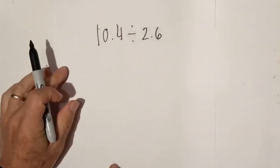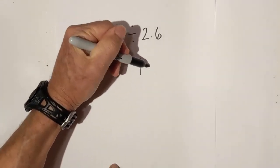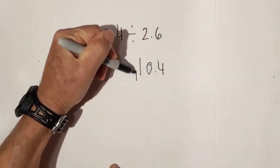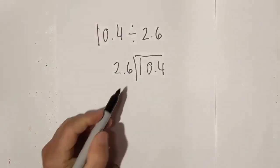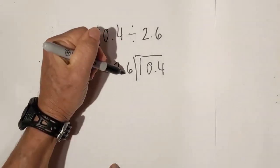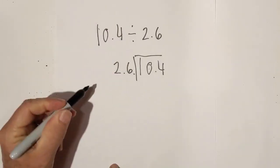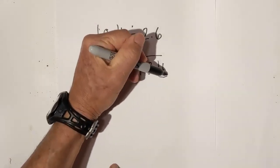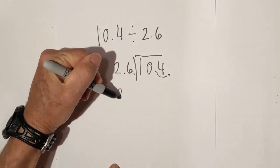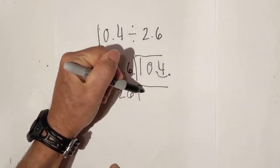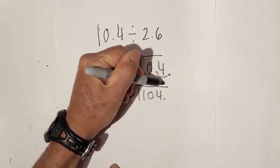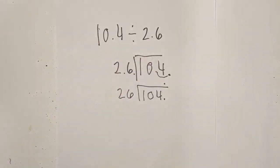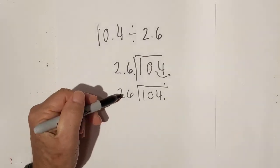Let's solve another problem. We have 10 and 4 tenths divided by 2 and 6 tenths. I'll rewrite it. Is the outside number a whole number? No — so move the decimal one place to the right on both sides. I'll rewrite it, then move the decimal straight up.